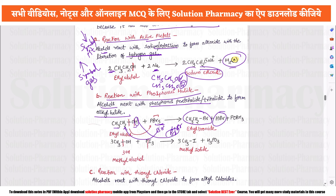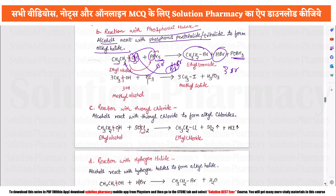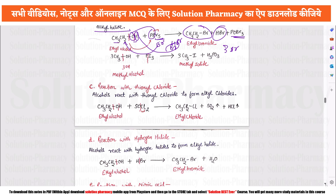Alcohols also react with phosphorus tribromide (PBr₃) to give alkyl bromides. In place of bromine, iodine can also be used, giving methyl iodide or ethyl iodide.